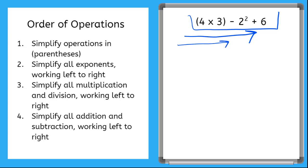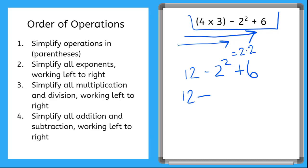For the first problem, we simplify what's in the parentheses: four times three equals twelve. So we have twelve minus two to the power of two, plus six. Next in order of operations, we simplify all exponents. Two to the power of two is two times two, which is four. So we have twelve minus four plus six. There's no multiplication or division in this problem.